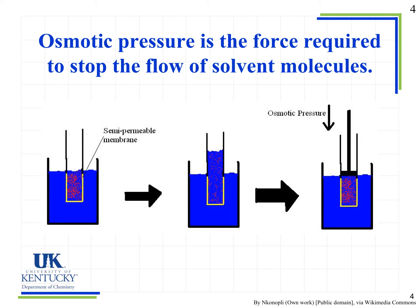When we first talked about osmosis, we said our goal was to get to equal concentrations. But that doesn't necessarily mean that it's going to get to equal concentrations. There's something called osmotic pressure — the pressure we need to exert on our solution to stop the flow of those molecules. Here we're exerting that pressure on the high concentration solution, and that prevents the water molecules from flowing from the low into the high concentration.